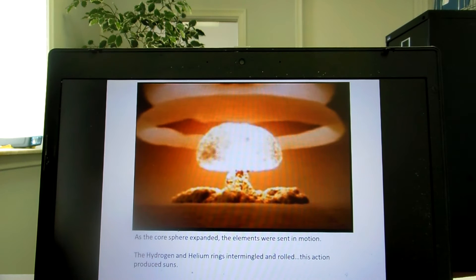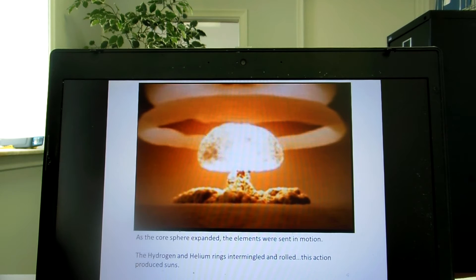As the core expanded, the elements were set into motion. The hydrogen and helium rings intermingled and rolled, and this action produced suns.